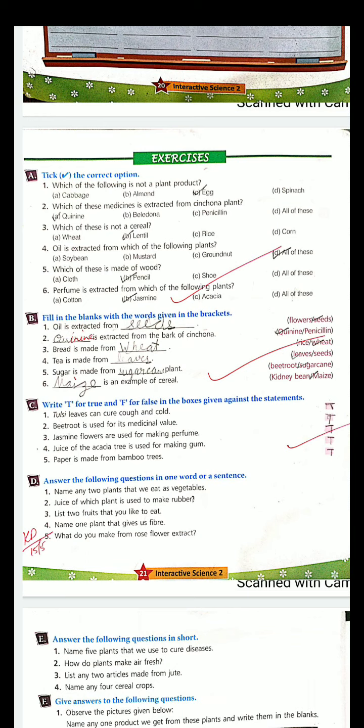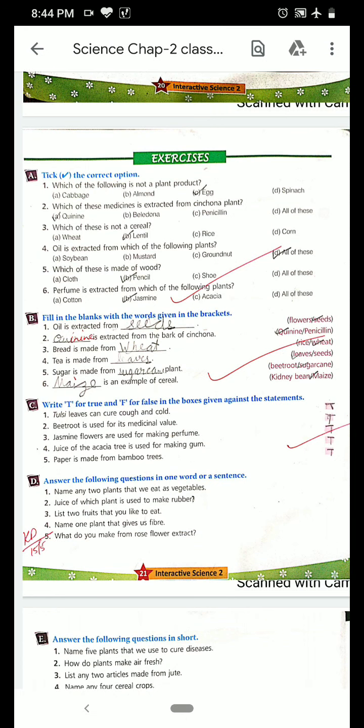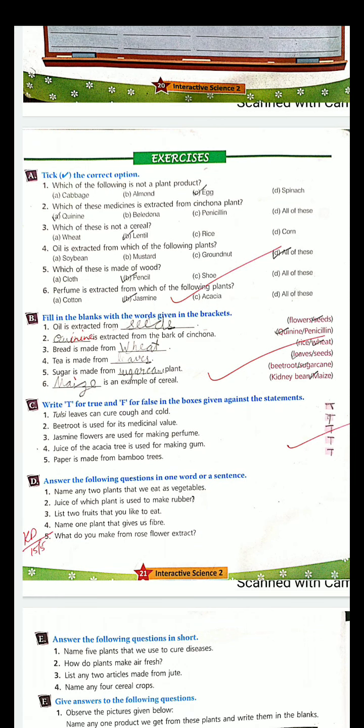Which of these is not a cereal? So wheat, lentil, rice, corn. Wheat is a cereal, rice is a cereal, corn is a cereal. So which is not a cereal? Lentil.